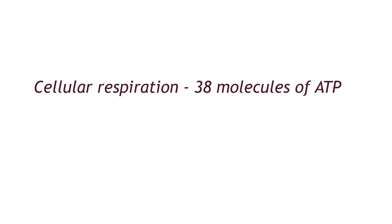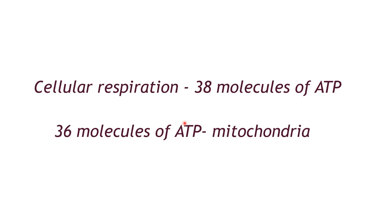The remaining three stages of cellular respiration occur in the mitochondria of the cell. During the process of cellular respiration, a total of 38 molecules of ATP are produced by the cell, and out of these 38 molecules, 36 molecules of ATP are produced in the mitochondria.